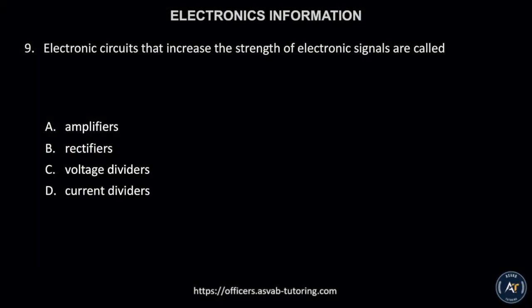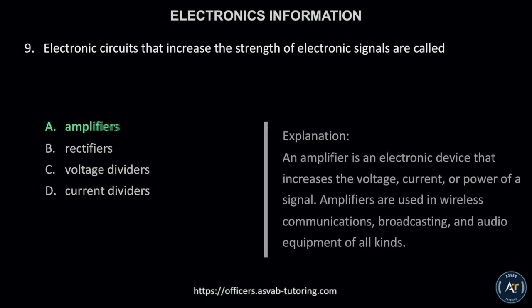Number 9. Electronic circuits that increase the strength of electronic signals are called: A. Amplifiers, B. Rectifiers, C. Voltage dividers, or D. Current dividers. The correct answer is letter A, amplifiers. An amplifier is an electronic device that increases the voltage, current, or power of a signal. Amplifiers are used in wireless communications, broadcasting, and audio equipment of all kinds.